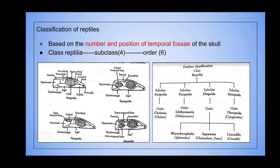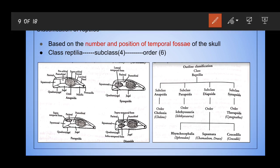The first subclass of Class Reptilia is Anapsida, as you can see in the diagram. The skull of Anapsida does not have any fossae in the temporal region other than the orbit, which is the shaded region. Other than that, in Anapsida you do not find any cavities in the temporal region, and as a result this subclass is termed Anapsida.